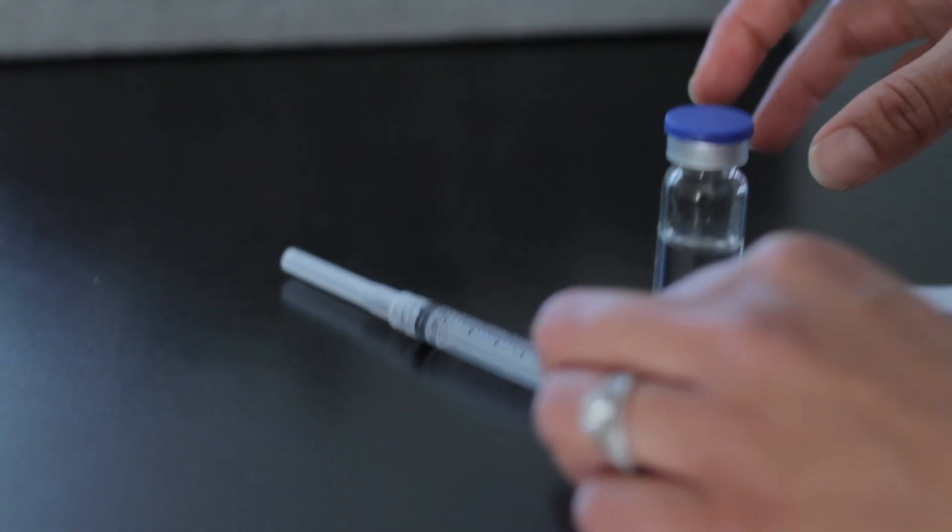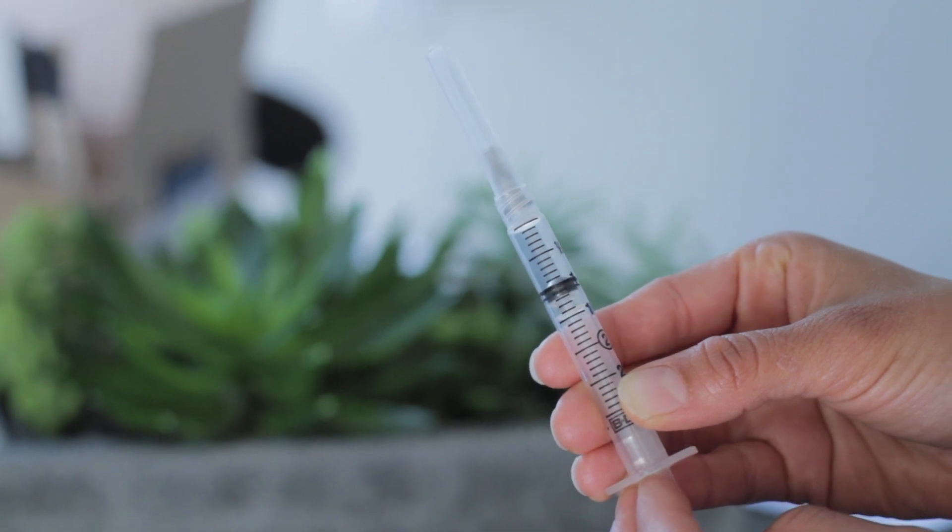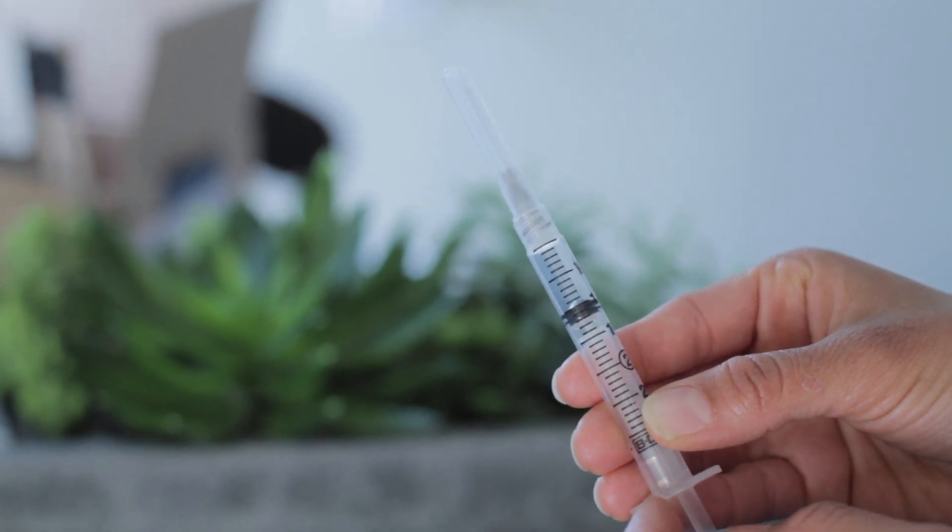All right, so we got our syringe. Right here we are going to pull back one milliliter of air, because that's how much we are going to withdraw. So that's what we will inject into the vial.